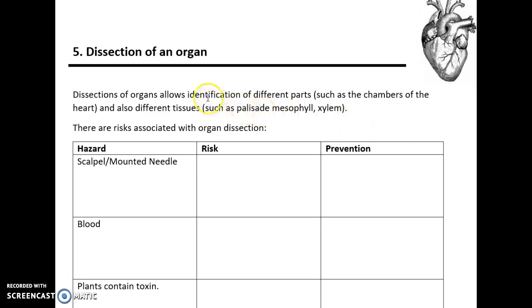The specification states that the organ to be dissected is either a heart, a human organ, or a plant organ. Dissections allow us to identify different parts, for example the chambers of the heart, the different structures like the aorta, the pulmonary artery, and so on. For plant organ dissection of a leaf, it's the palisade mesophyll cells, the xylem, the phloem, the vascular bundles, and so on.